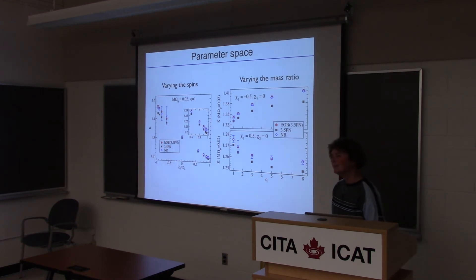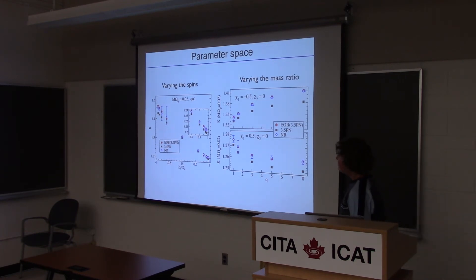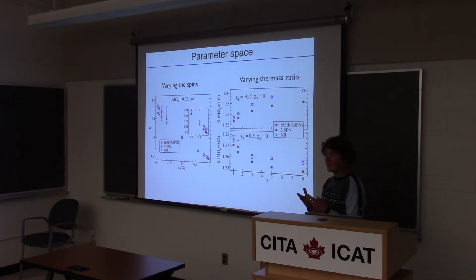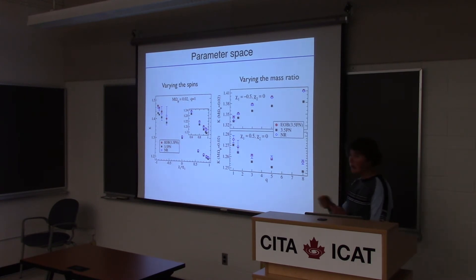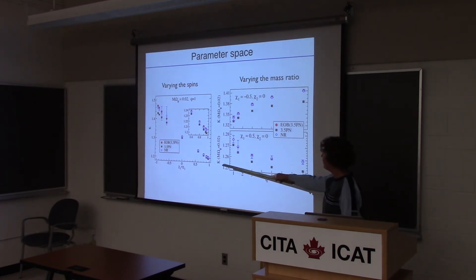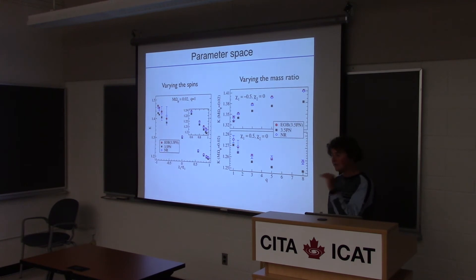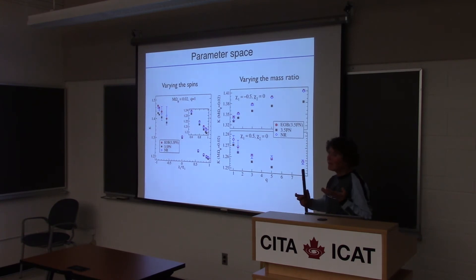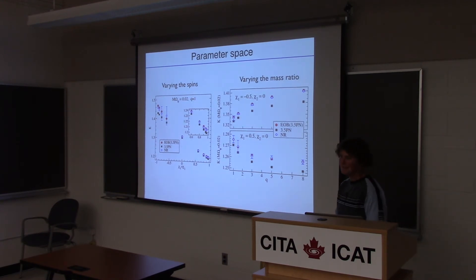As for intuition on why it gets worse for anti-aligned spins: probably these anti-aligned spins are more relativistic in the sense that they are closer to the unstable orbit. If you think of a particle in Kerr, for anti-aligned spins the ISCO is at 9m or so, far out, whereas for aligned spins it's at 1m. If you fix yourself to some specific frequency, you're closer to the ISCO for anti-aligned than for aligned. That's a hand-waving argument — I don't know if it's entirely correct, but it's an answer I can give.